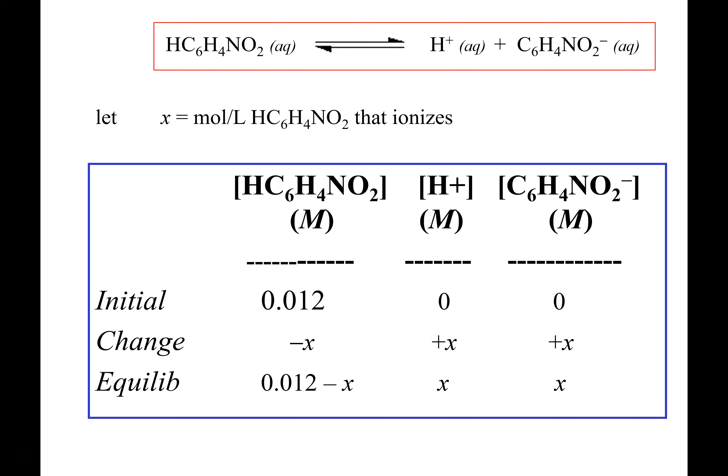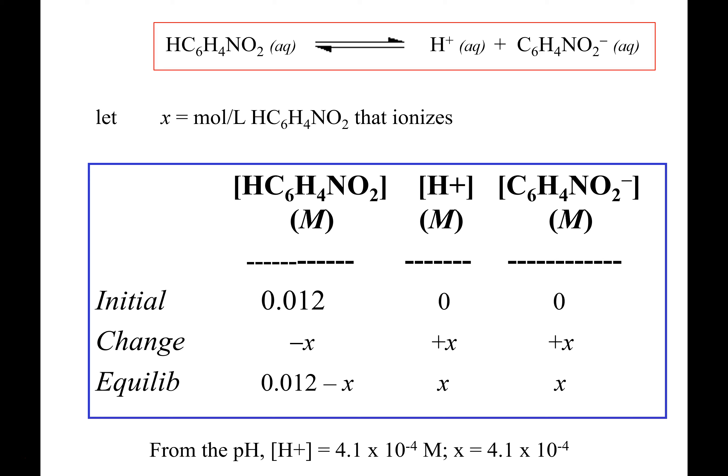Here's our ice table, and now we know X. So we're almost done with this problem. We need to plug in X and know by difference how much of the unionized weak acid we have left. 4.1×10⁻⁴ is 0.00041. When I line those two up, my X is not going to even change the 0.012 — that's the simplifying assumption. At equilibrium, the weak acid concentration remained essentially unchanged because so little ionized.